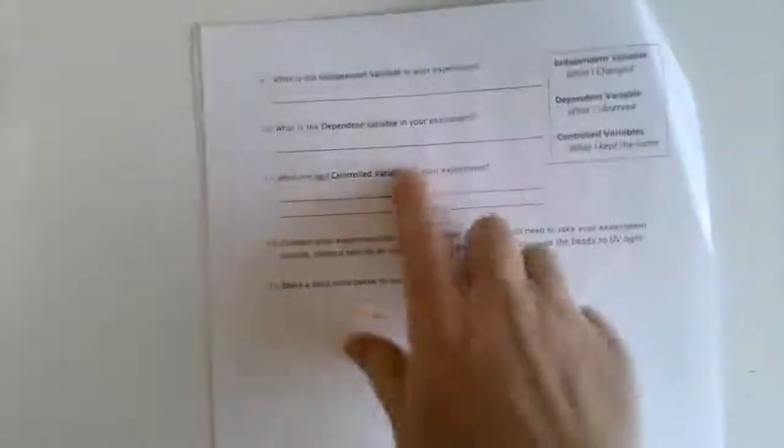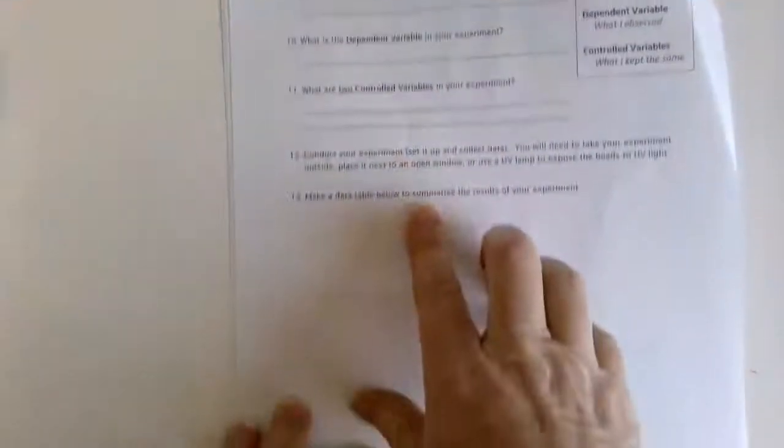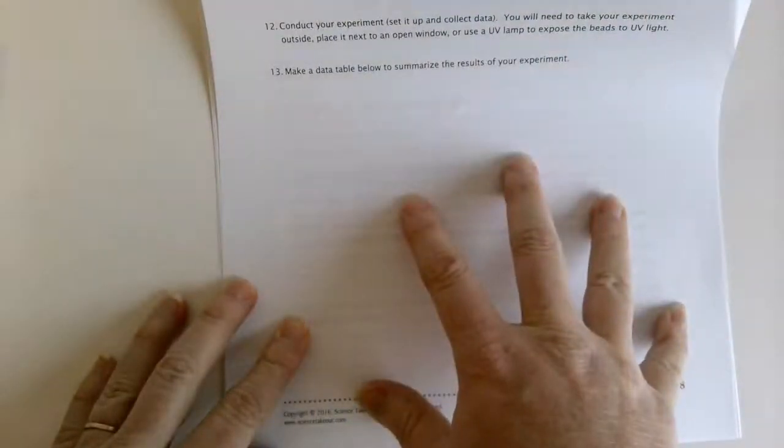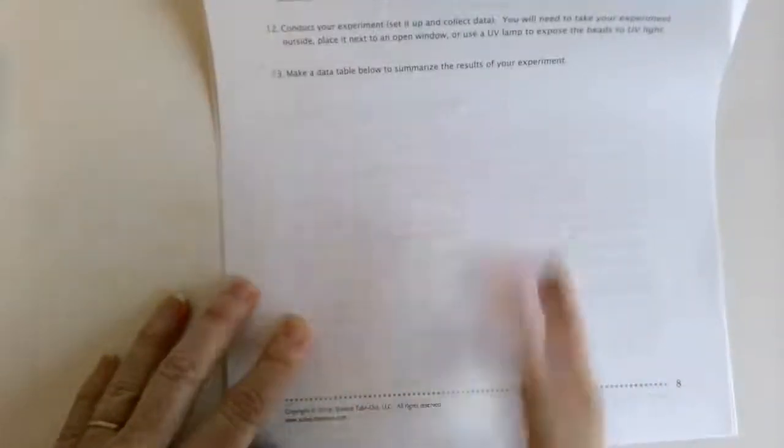Then you're going to write about the dependent and independent variables, the controls. And then you're going to make - this is important - a data table that summarizes the results of your experiment. So make sure that you actually do the experiment and then you make a data table.